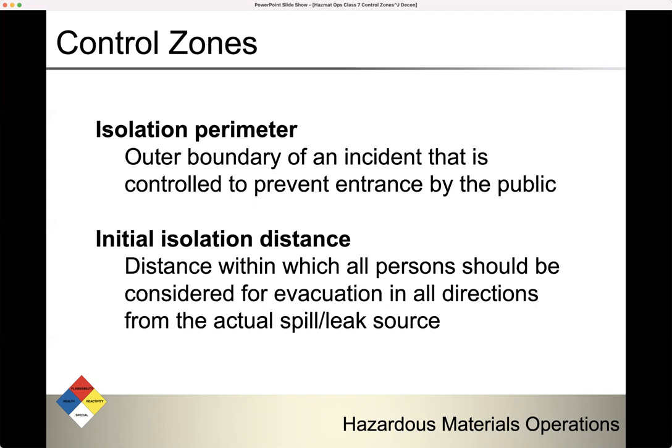Next, we move on to initial isolation distance. This is the distance within which all persons should be considered for evacuation in all directions from the actual spill or leak source. This is that circular-shaped area that we want to get everybody out of — nobody goes in there. This is also called the hot zone, but we determine the hot zone with the initial isolation distance.